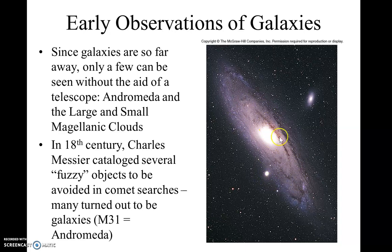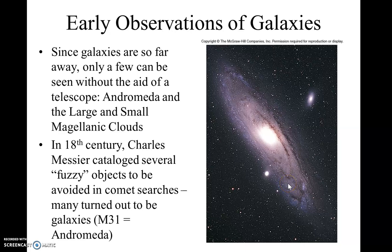This is Andromeda — it's a spiral galaxy. We see it kind of tilted like this. As I said, it's two and a half million light years away. And you can actually see this galaxy with the naked eye — no binoculars. It doesn't look like this, of course; it's just kind of a fuzzy dot in the night sky, but it's fairly easy to see.